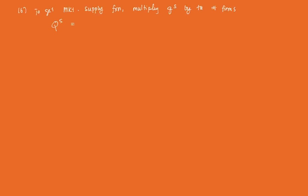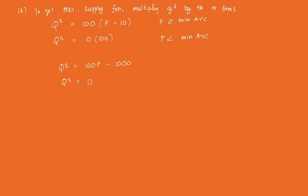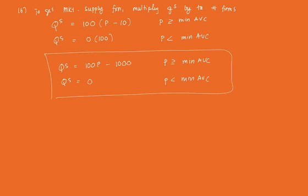Since we assume the firms have identical short-run cost functions, we multiply by 100. So the market supply function is QS (capital) = 100 × (P − 10) when price is greater than or equal to minimum AVC, and QS = 0 × 100 = 0 when P is less than minimum AVC. Simplifying: QS = 100P − 1,000 when P ≥ minimum AVC, and QS = 0 when P < minimum AVC. And that's how we derive the short-run market supply function.